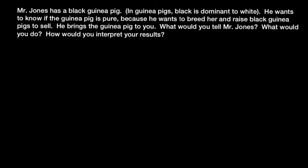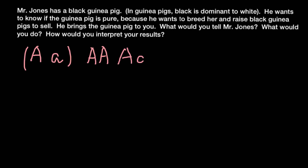First of all, let's list all the possible genotypes for the guinea pig and its alleles. Imagine that we have two alleles: one dominant, capital A, and another recessive, small a. In a diploid organism these two alleles can make three genotypes. The first is capital A capital A — since capital A stands for black color, this is phenotypically a black guinea pig. The second possible genotype is capital A and small a. Because of simple dominance, the dominant allele is dominant over the recessive one, so the phenotype is also black.